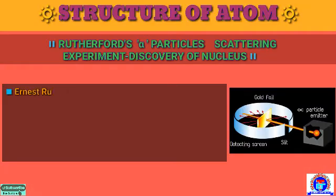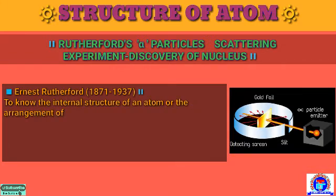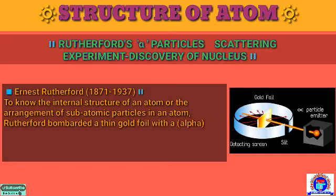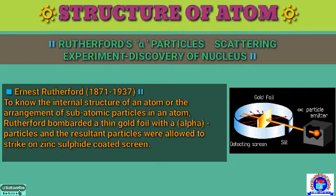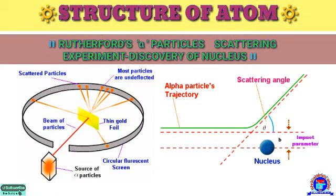Now we understand the Alpha Rays Scattering Experiment. To know the initial structure of an atom, or the arrangement of subatomic particles in an atom, Rutherford bombarded a thin gold foil with alpha particles and the resulting particles were allowed to strike a zinc sulphide coated screen. Here the diagram is given so you can understand how the alpha particle is scattered.